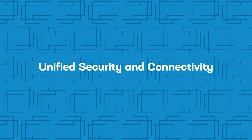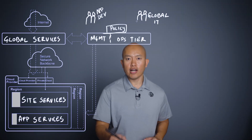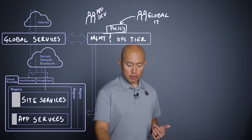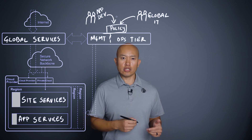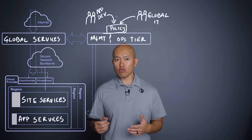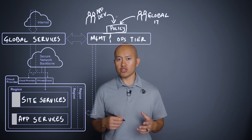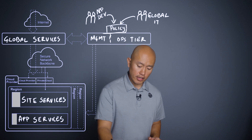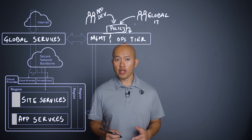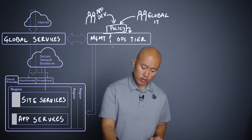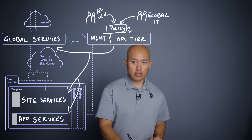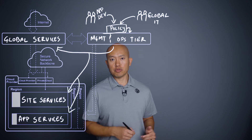From there we have the benefit of unified security and connectivity. Global IT can define security and network policies, and then app developers can consume them, ensuring consistent policy enforcement without requiring developers to become experts in security or networking. These policies can then be loaded into the management and operational services tier and delivered into enforcement points on the global shared services tier, the site services tier, or down to the app services tier.